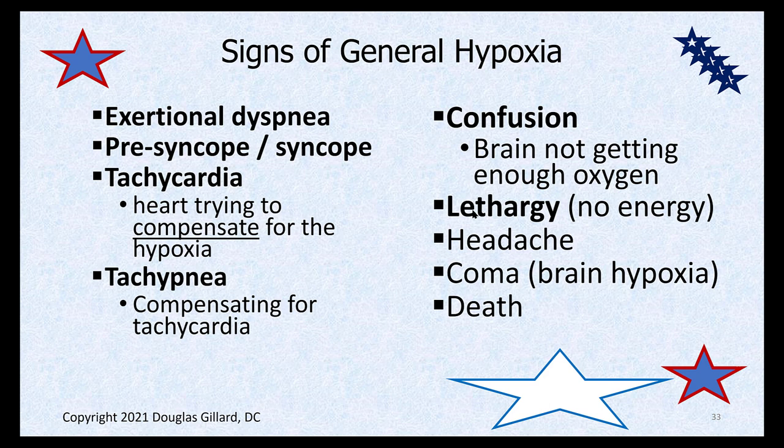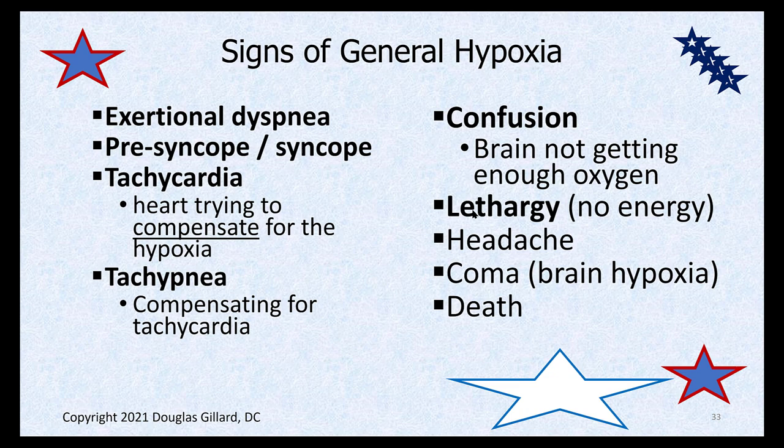The patient will have dyspnea and exertional dyspnea - they walk up the stairs and don't have enough oxygen to power the muscles. They breathe rapidly trying to get more oxygen, causing tachycardia and tachypnea. They might experience pre-syncope or syncope because the brain isn't getting enough oxygen. They'll be confused, lethargic, might have a headache. At the extreme end, they slip into a coma and die. Very serious condition.